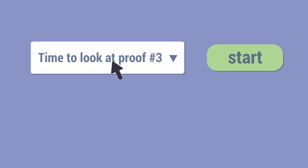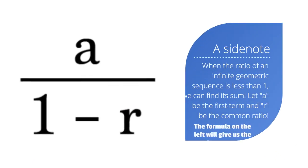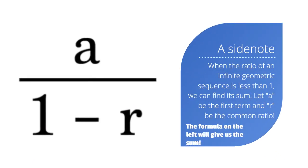Time to look at proof number 3, geometric series. A side note, when the ratio of an infinite geometric sequence is less than 1, we can find its sum. Let a be the first term and r be the common ratio. The formula on the left will give us the sum: a divided by 1 minus r.